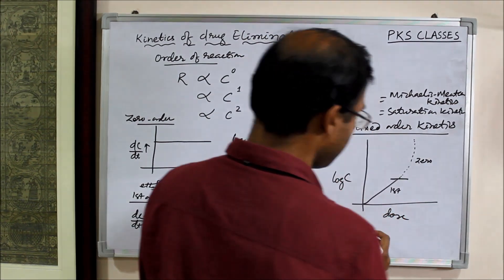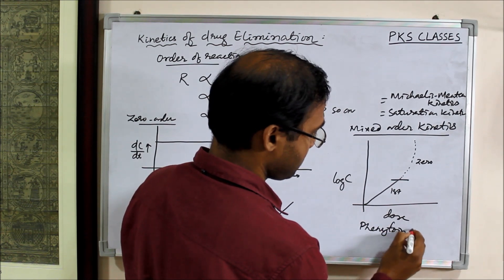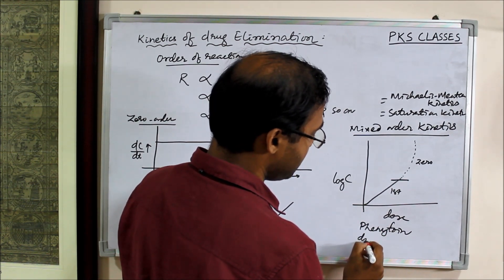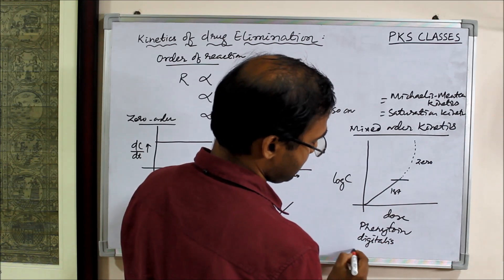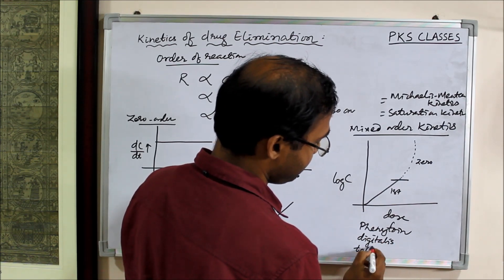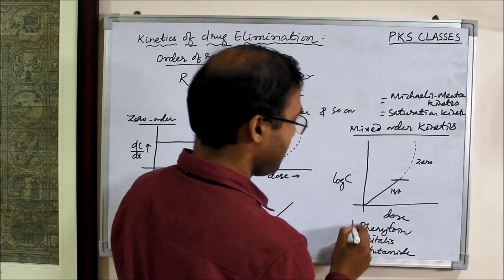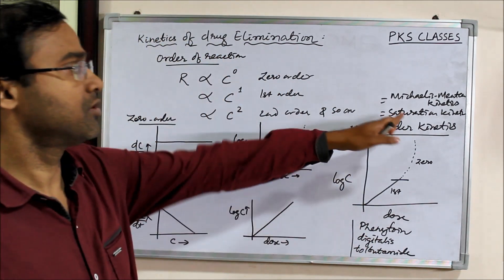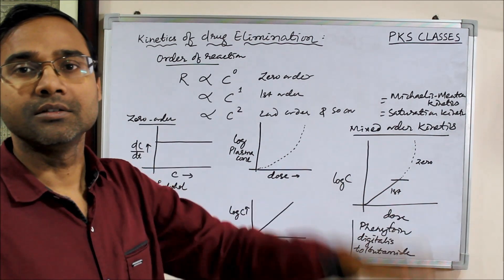Many drugs like phenytoin, digitalis, or tolbutamide all show saturation kinetics - initially first order, after that zero order.